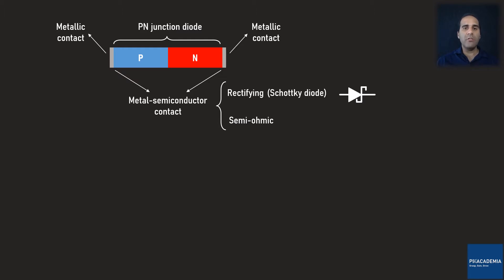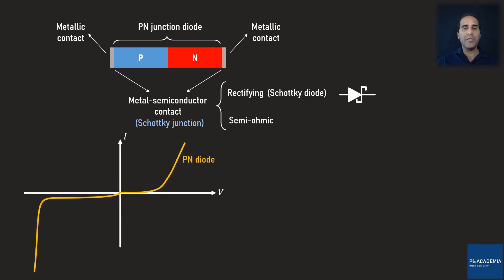Traditionally, a metal semiconductor junction is called a Schottky Junction, and as explained, it can be semi-ohmic or rectifying. If this is the current voltage diagram of a normal PN junction diode, the current voltage diagram of a Schottky Diode looks like this. What this tells us is that the Schottky Diode has smaller built-in and breakdown voltages when compared with a PN junction diode.